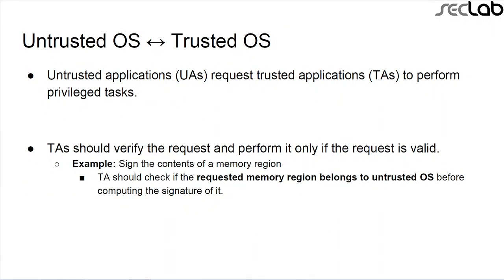As mentioned, the secure world has higher privilege, so untrusted applications need to talk to trusted applications to perform privileged tasks. When a trusted application receives a request, it needs to validate it. If valid, it performs it. An example would be signing a memory region using a key stored in the trusted OS. The trusted application must first verify the memory region actually belongs to the untrusted OS before signing it.